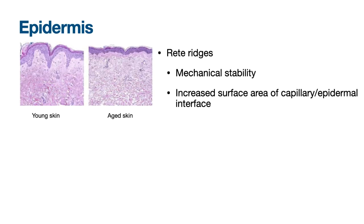The epidermis is a physical barrier against pathogens and fluid loss, but also a chemical barrier, a barrier against oxidant stress, and an immunologic barrier. Something that many people don't recognize is that the epidermis is avascular and therefore relies on diffusion of oxygen and nutrients from the underlying dermis. One characteristic that stands out histologically is the presence of rete ridges — this undulating interface between the epidermis and dermis that provides mechanical stability and increases the surface area of the capillary-epidermal interface, maximizing nutrients to the avascular epidermis. Flattening of these rete ridges with age is one of the main reasons skin is more prone to tears and shear injury as you get older.